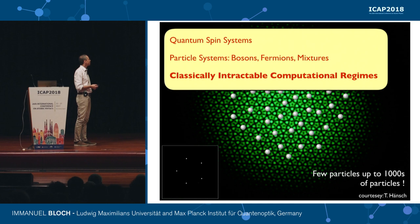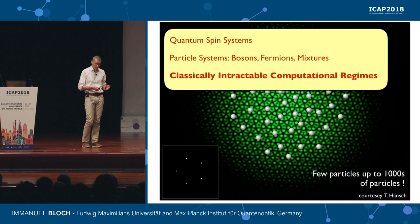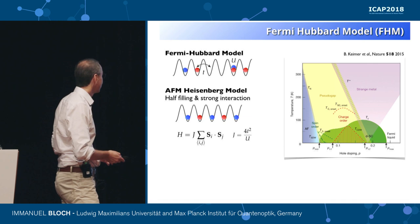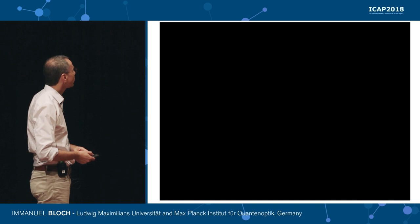In all this discussion about quantum simulators and quantum computers, it's fair to say that ultracold atoms are today the only platform where we have achieved something like a quantum advantage in looking at problems that cannot be calculated on classical supercomputers. The problem I want to look at today is the celebrated Fermi-Hubbard model.